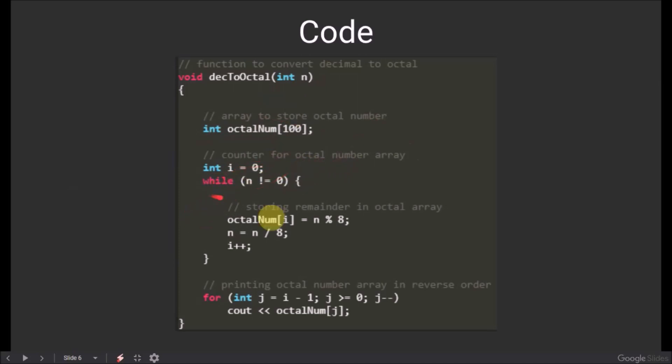Now we run a while loop until n is not equal to 0. First, we find the remainder of n when it is divided by 8 and store it into the ith position of the octalNum array. Then we divide the number by 8 and increase i by 1. These 3 steps will happen until n is not equal to 0.